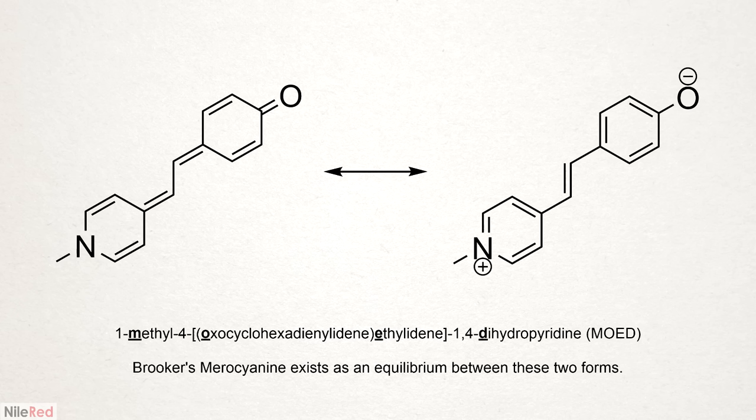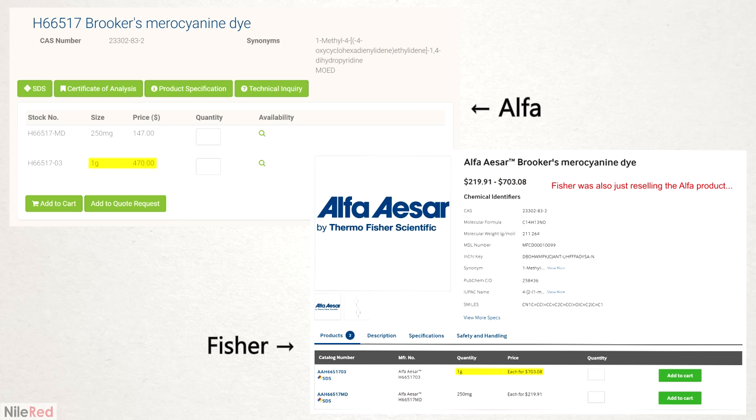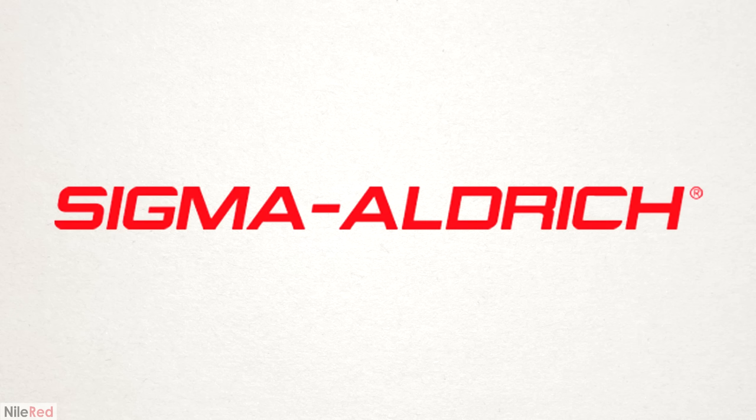In general, I was really interested by this whole concept of solvatochromism and I wanted to try it out. As with most of my projects, I planned to make it myself, but just out of curiosity I looked online to see how much it would cost. The only places that I found selling it were Fisher and Alpha, and both were insanely expensive. Alpha was a bit better than Fisher, but it was still almost $500 a gram. And oddly enough, Sigma Aldrich didn't even sell it at all.